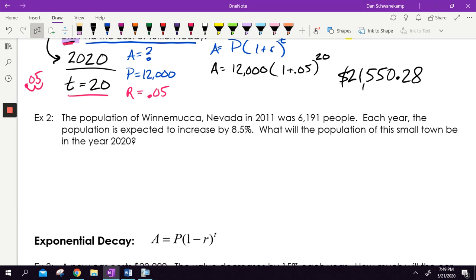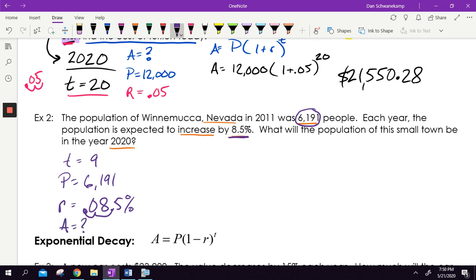Number two, the population of Winnemucca, I don't know how to say that, that city in Nevada in 2011 was 6,191 people. Each year, the population is expected to increase by 8.5%. What is the population in the year 2020? Guess what? It's 2020. So 2020, 2011, my T is going to be nine because nine years have gone by. It was this amount. So that's going to be my principal. That's what I started with. My rate, it's 8.5%. But remember, if it's 8.5%, we got to move that decimal two spots. So it's really 0.085. And obviously, I'm looking for my ending amount.